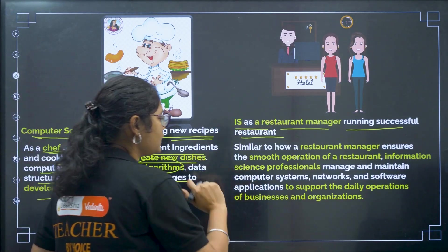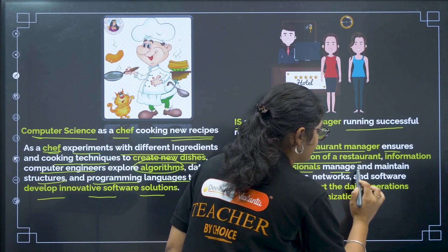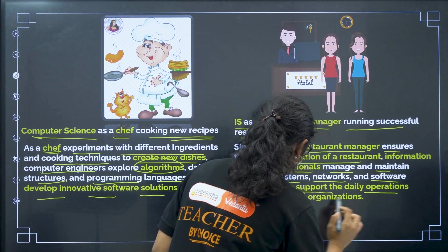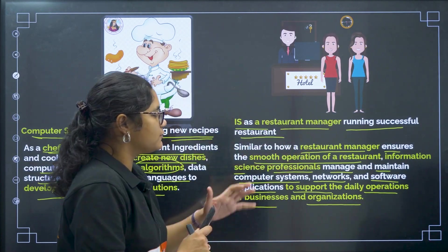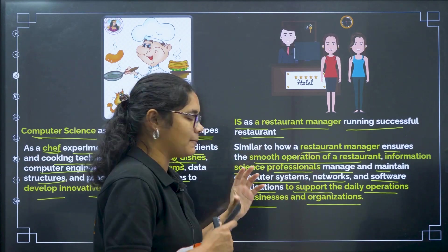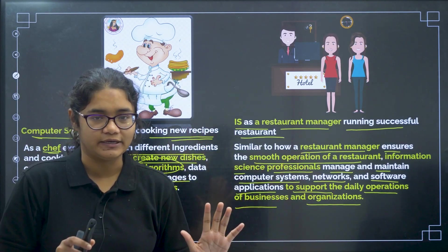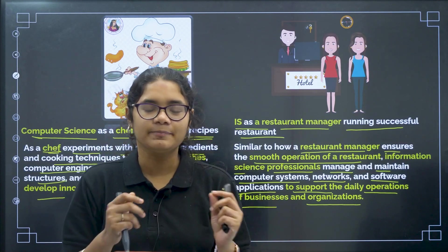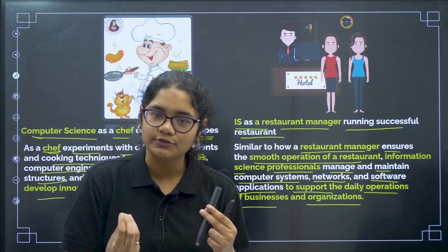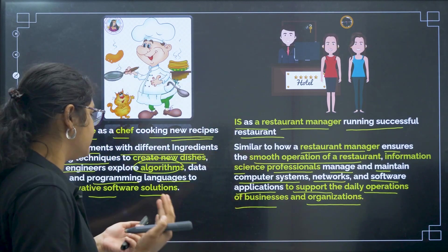And this is a hotel manager who manages that all customers are happy, they are getting what they want, and the hotel is running successfully. Similarly, information science professionals manage and maintain computer systems, networks, and software applications to support the daily operations of businesses and organizations. So information science engineers try to manage and maintain these systems so that daily operations can run smoothly.